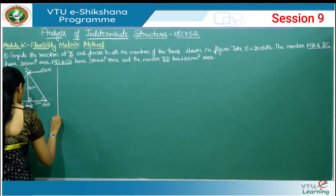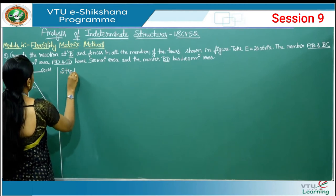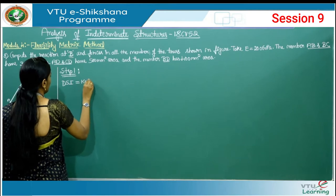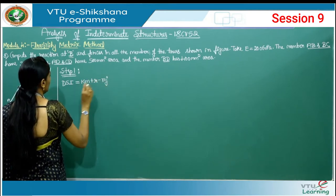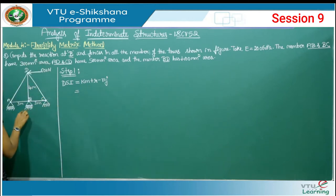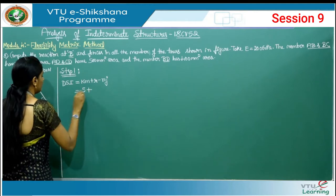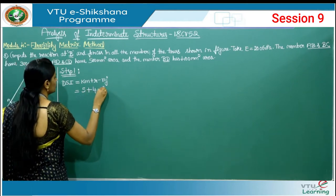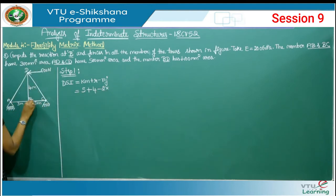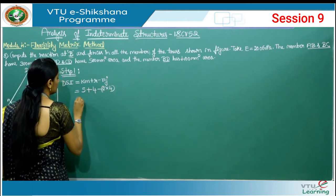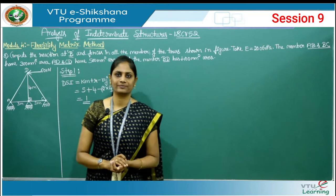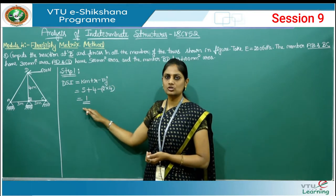In step number one we are going to find the degree of static indeterminacy. For trusses, the formula is km + r - nj, where k=1 and n=2. Counting members: 1, 2, 3, 4, 5 — we have 5 members. Reactions at A and B are roller supports and at C we have a hinged support, giving us 4 reactions. Number of joints is 4. So 5 + 4 = 9, minus 8 = 1. The degree of static indeterminacy is 1.